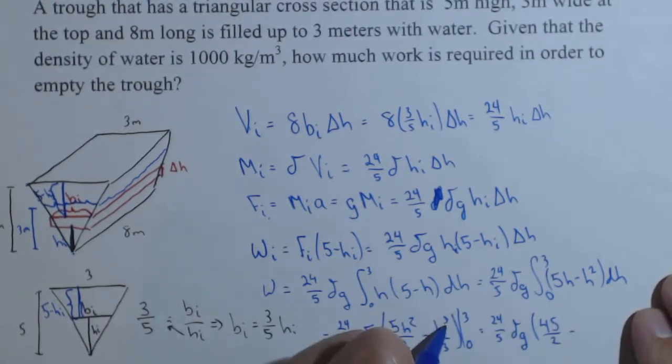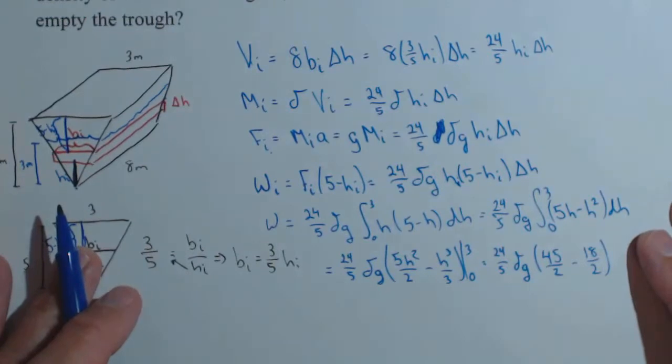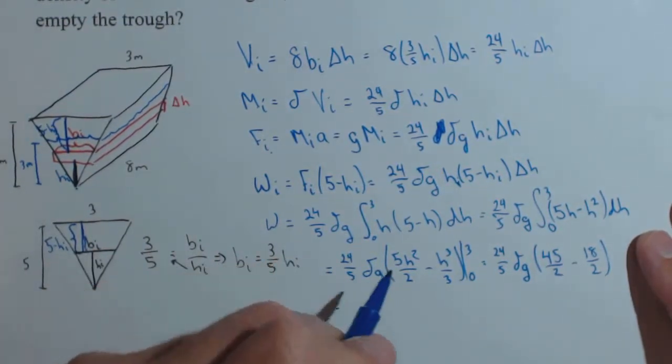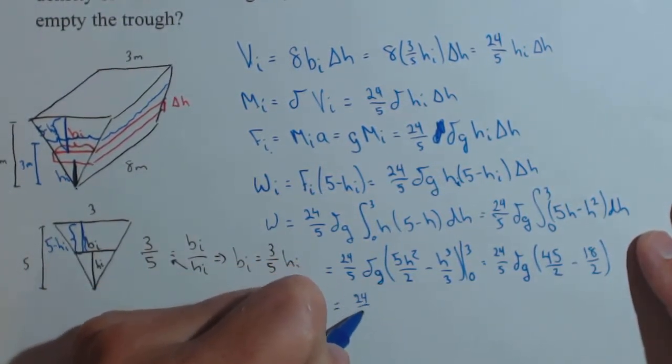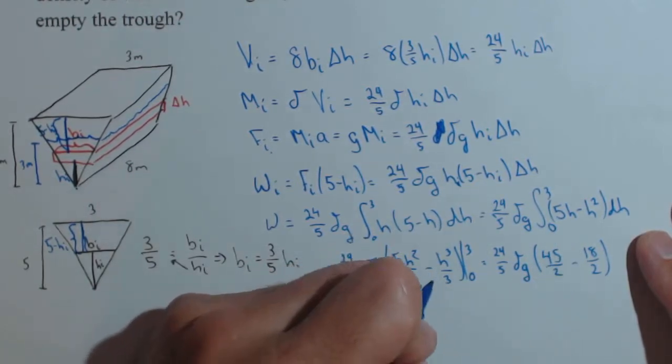Plugging 3 in here, we get 3 cubed, which is 27, divided by 3 is 9. I'm going to write that as 18 halves just to be able to do our fractions. So we got 24 fifths delta g times 27 halves.